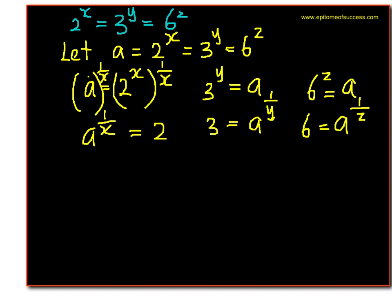Now can you see how you are able to make use of this information? 2 times 3 equals 6. So let's write that out. 2 times 3 equals 6. So now we substitute: a to the power of 1 over x multiply with 3 is a to the power of 1 over y, that equals 6 which is a to the power of 1 over z.